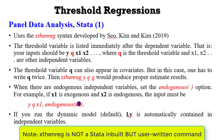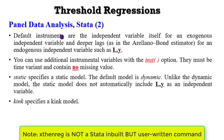So YQX1 and the endogenous regressor is included here. In STATA, the dynamic model is the default, where you have the lag-dependent variable automatically generated. By default, instruments are the independent variables themselves for an exogenous independent variable and deeper lags.